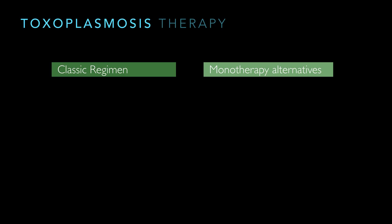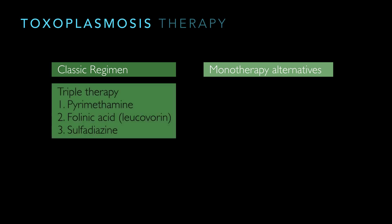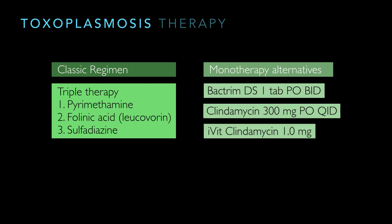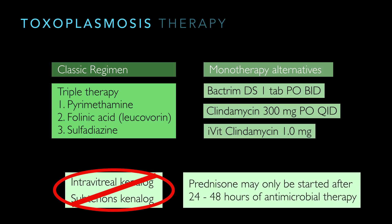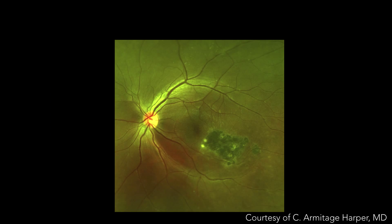Let's talk specifically about the classic regimen — triple therapy. Dr. Hager, do you remember what triple therapy is? You're saying folinic acid — I heard the F. That's the classic regimen. There's a study where uveitis specialists were surveyed, and more of them use this than not. But the evidence suggests monotherapies work pretty well. Bactrim DS has been used as monotherapy for a long time. Clindamycin is being used a little bit more, and intravitreal clindamycin is being used even more since we're doing tons of injections anyway. Intravitreal and sub-Tenon's Kenalog — that's a big no-no. But we do start systemic steroids after 24 to 48 hours of antimicrobial therapy.